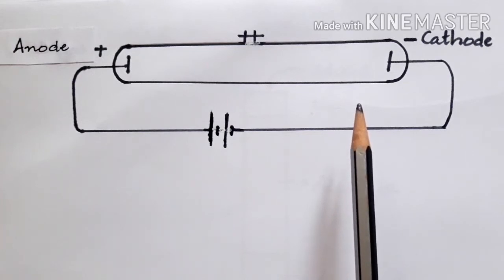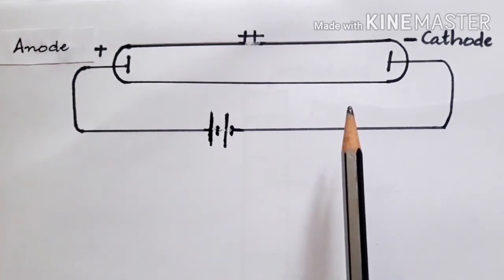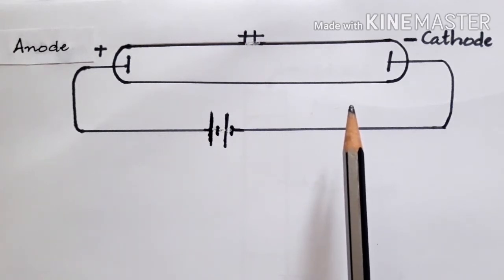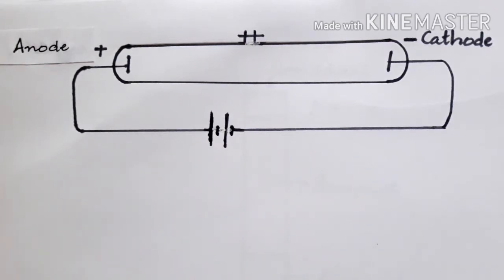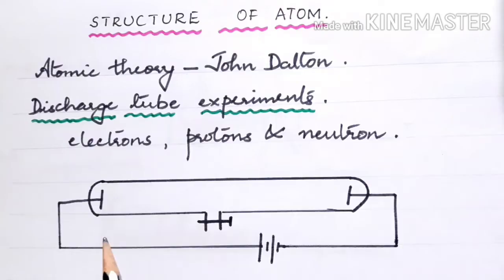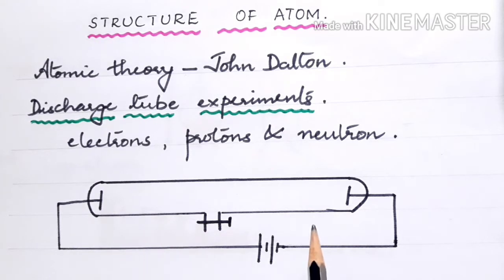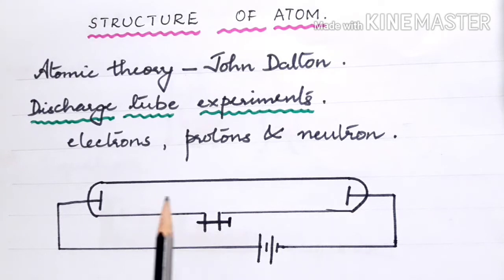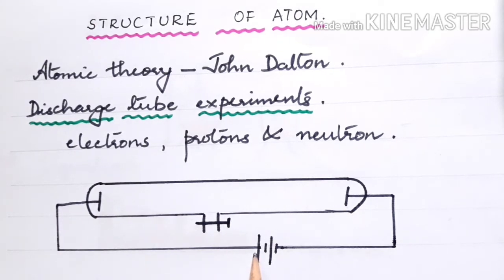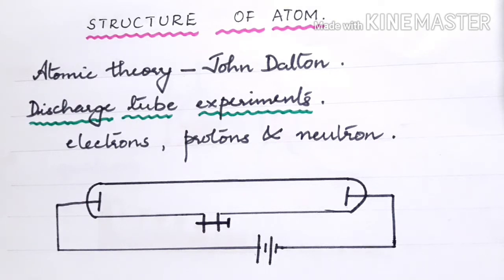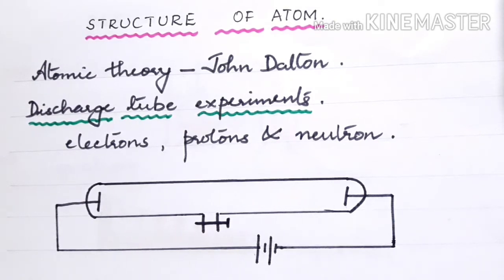The cathode rays were later identified to be made up of negatively charged particles known as electrons. These electrons were discovered by J.J. Thomson. The discharge tube consists of a long glass tube mounted with two electrodes — the one connected to the positive side of the battery becomes the anode, and the one connected to the negative side becomes the cathode.